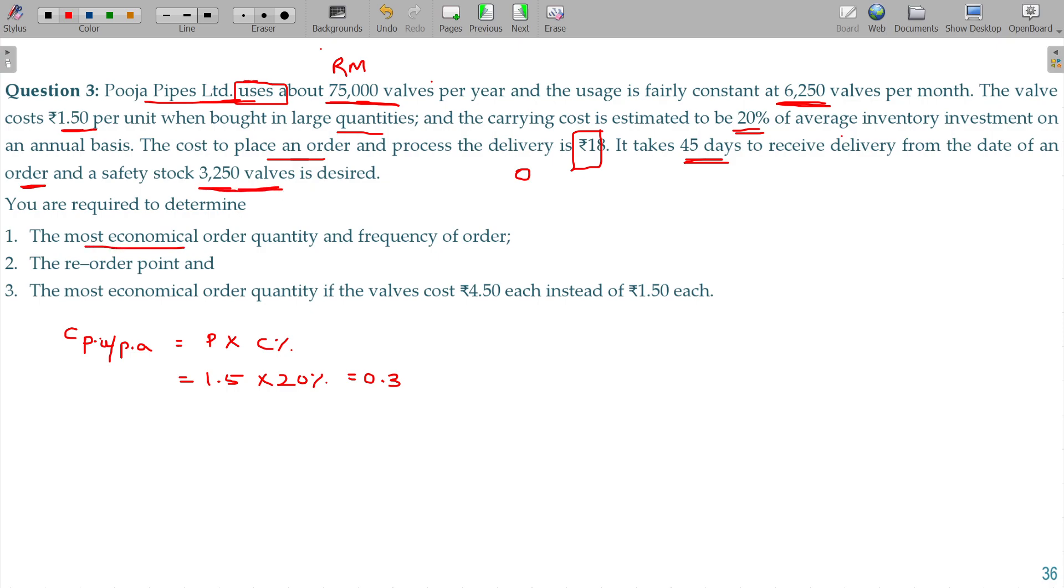So EOQ formula: root of 2AO by C. Annual requirement being 75,000, ordering cost being 18, and carrying cost being 0.3. Then the ultimate value is 3,000 units.